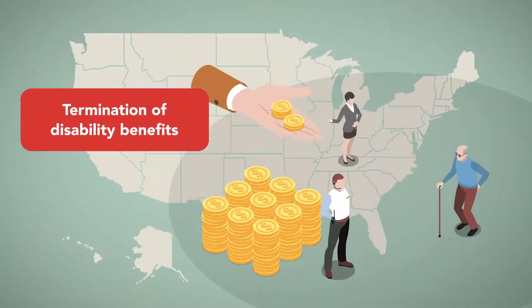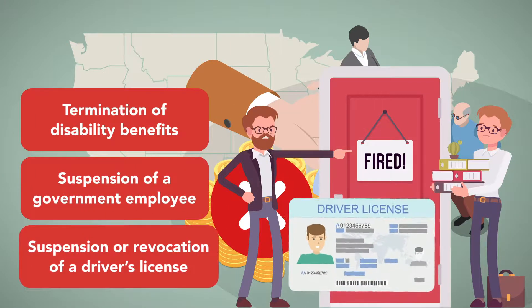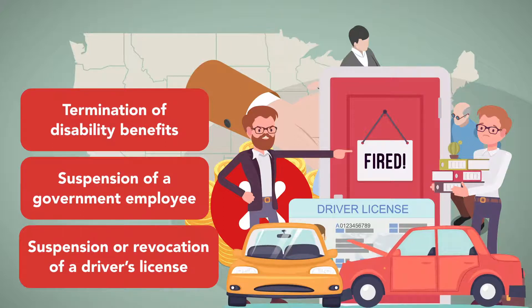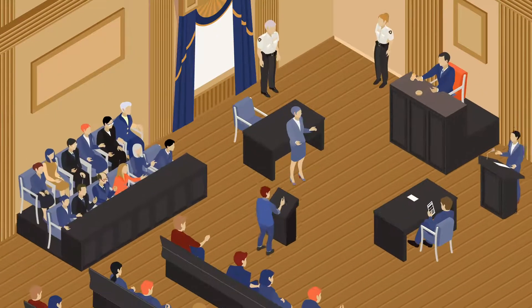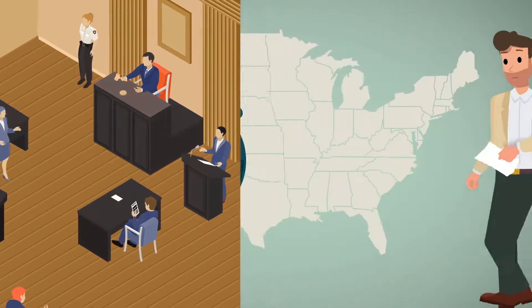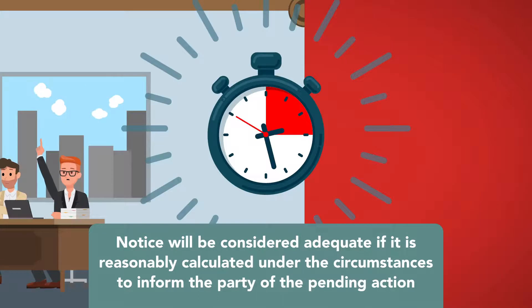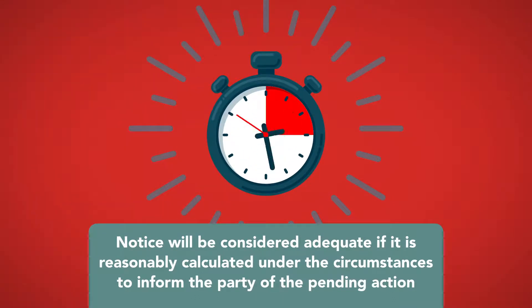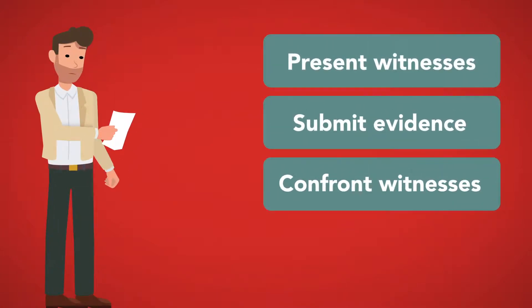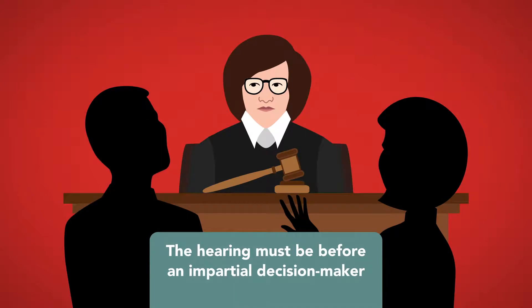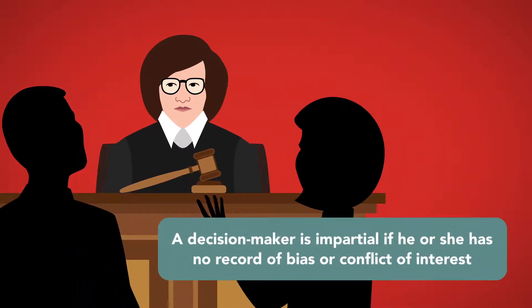Cases where post-action hearings may suffice include the termination of disability benefits, suspension of a government employee, and the suspension or revocation of a driver's license from a driver with a history of unsafe driving. When due process does require a hearing, the right to a hearing entails a set of elements. First, the person must receive timely notice of the proposed government action and the opportunity to raise objections at a hearing. Notice will be considered adequate if it is reasonably calculated under the circumstances to inform the party of the pending action, even if the notice is not ultimately received. Second, those who are to be deprived of protected interests must be afforded the opportunity to present witnesses, submit evidence on their own behalf, and confront opposing witnesses. Third, the hearing must be before an impartial decision maker — one who has no record of bias or conflict of interest and was not previously involved in the decision-making process.